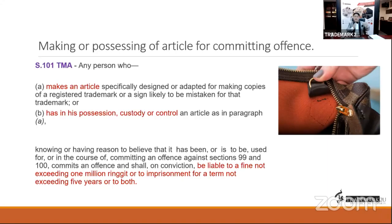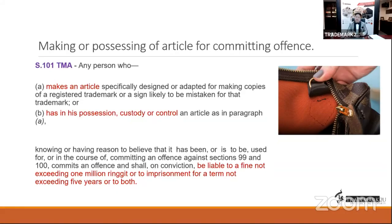Section 101 covers making and possession of articles for committing an offense. If you are a manufacturer or OEM making copies of a registered mark likely to be mistaken for the trademark, or if you have in your possession, custody, or control such items, you are committing an offense. The penalty under Section 101 is also a fine not exceeding one million ringgit, or imprisonment not exceeding five years, or both.